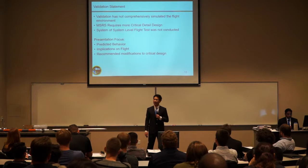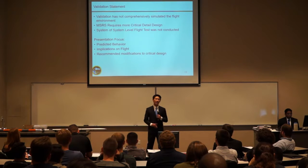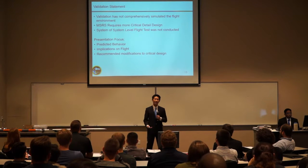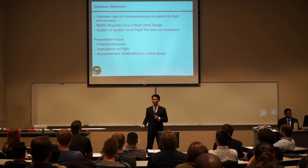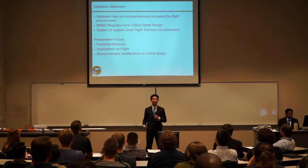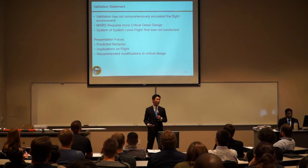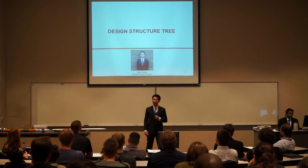Before we begin, I'd like to make a quick statement about validation. The team is very confident in the high-level design of our rocket and it is capable of achieving the mission objectives. However, some areas still remain in the critical design phase, so validation testing in those areas is premature. This presentation will focus on what we expect to happen as a result of those validations and what implications those results might have on the flight. These critical design areas will also contain recommendations for modifications. At this point, I'd like to introduce Blake Gaines to talk about the Design Structure Tree.